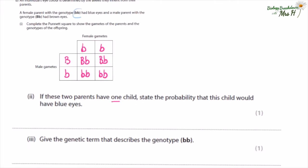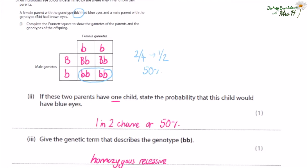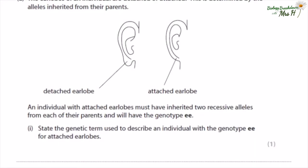Using this genetic cross we can answer the next questions. If these two parents had one child, the probability that the child would have blue eyes — looking at the Punnett square, blue eyes is bb, and there is a two out of four chance, which is the same as one out of two or 50%. If mum and dad had another child there would still be a 50% probability. Give the genetic term that describes the genotype bb — that is homozygous recessive.